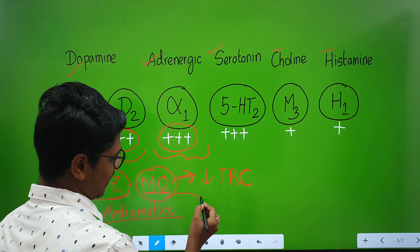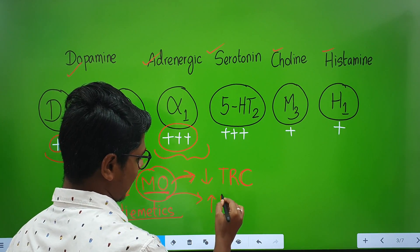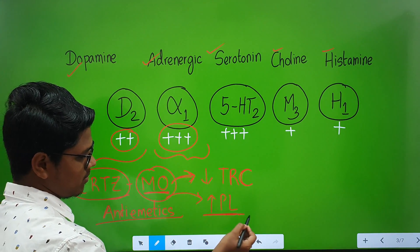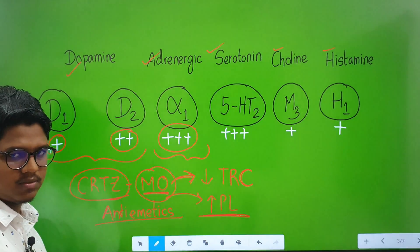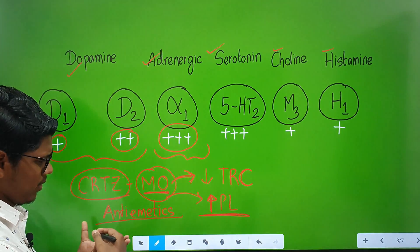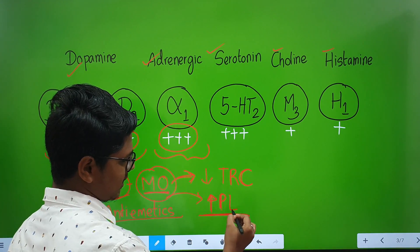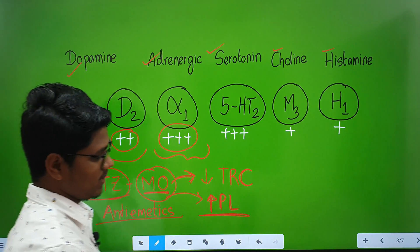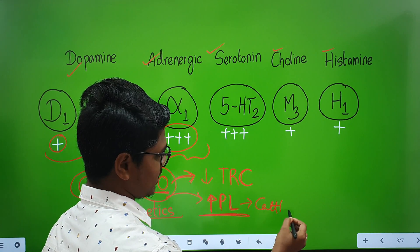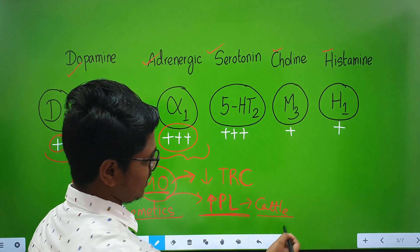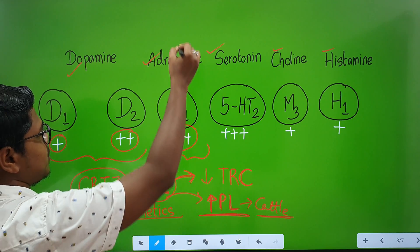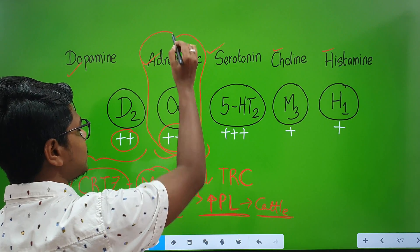Due to dopamine receptor blockade, they increase prolactin secretion, leading to lactogenesis. Normally, prolactin secretion is under the negative influence of dopamine; when dopamine receptors are blocked, prolactin increases and lactogenesis occurs. In cattle in the field, you may find use of triple formagen, available under the brand name Sequel, used for lactogenesis.